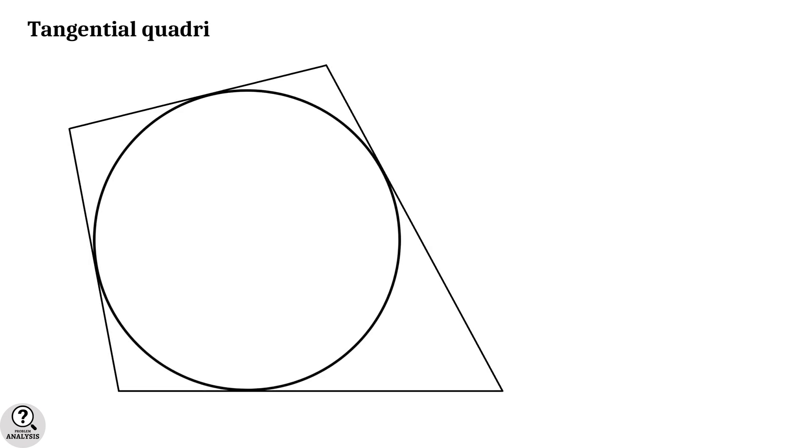So, consider this quadrilateral and an inscribed circle. That is, as you can see, all the 4 sides of the quadrilateral are tangents to a single circle. Such a quadrilateral is called a tangential quadrilateral. Now there is a beautiful property which makes the tangential quadrilateral more special.